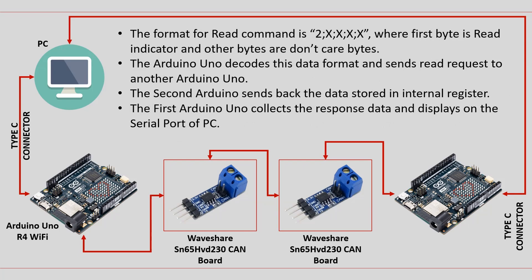The format for the read command is: 2, X, X, X, X — where the first byte is the read indicator and the other bytes are don't-care bytes. The Arduino UNO decodes this data format and sends a read request to another Arduino UNO. The second Arduino sends back the data stored in its internal register. The first Arduino UNO collects the response data and displays it on the serial port of the PC.